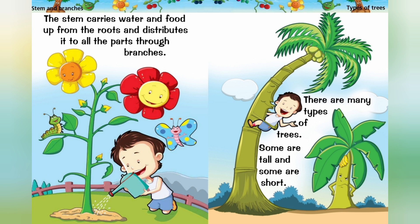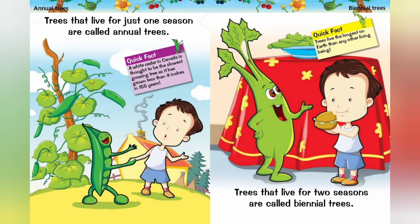Types of Trees. There are many types of trees. Some are tall and some are short. Annual Trees: Trees that live for just one season are called annual trees. A white cedar in Canada is thought to be the slowest growing tree, as it has grown less than 4 inches in 155 years.